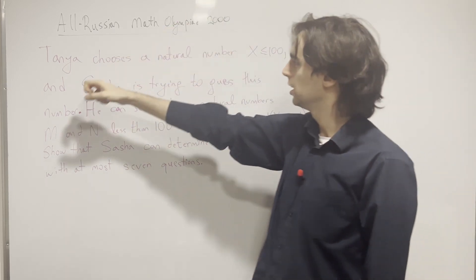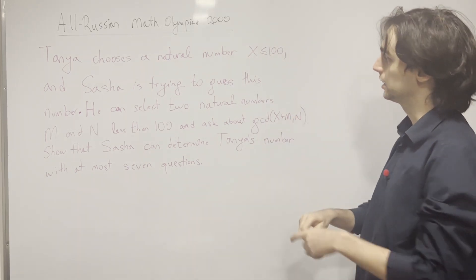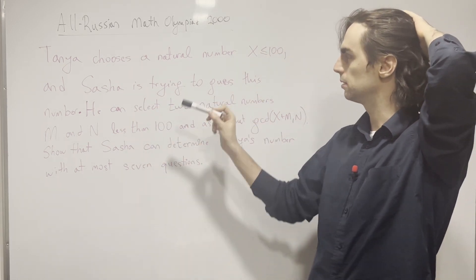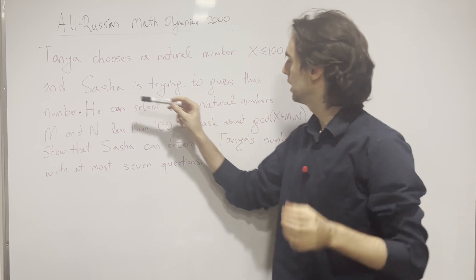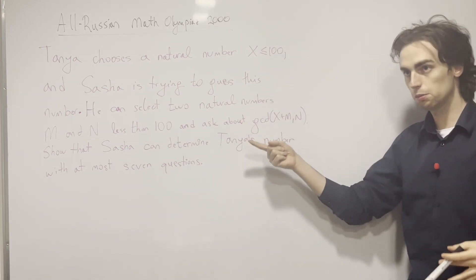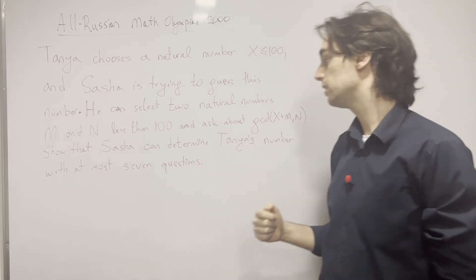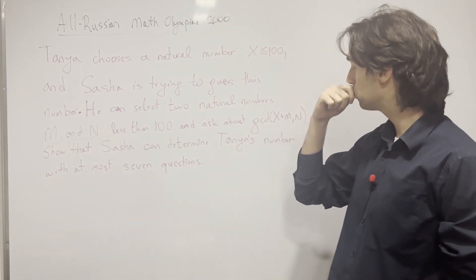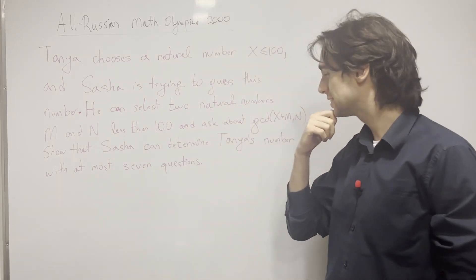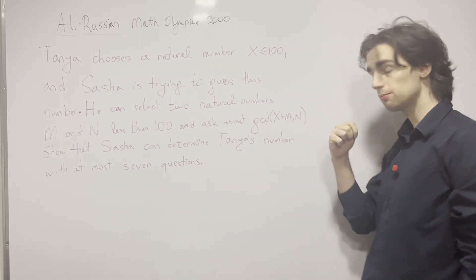We have Tanya and Sasha - they're Russians, and Sasha's actually both a boy's and a girl's name. They're trying to guess this number X which is less than 100. The interesting part of the problem is this condition: the GCD of X plus m and n, where m and n are two numbers that you pick, so that Sasha can determine his number in seven questions.